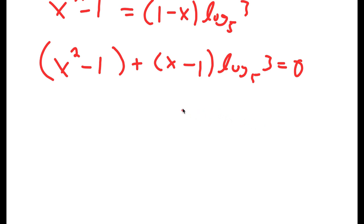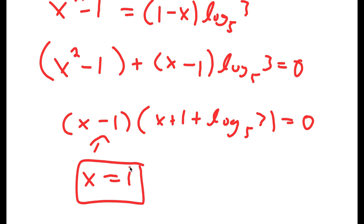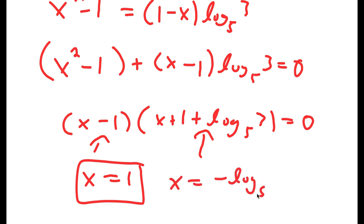This factors to x minus 1 times x plus 1 plus log base 5 of 3 is equal to 0. So this gives me x minus 1 equals 0, meaning x is equal to 1. And if you solve the other factor, you get x is equal to negative log base 5 of 15.